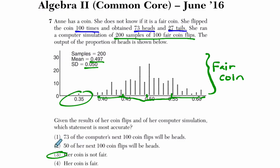And then if you look at choices 1 and 2, you can see they're kind of absurd. 73 of the computer's next 100 coin flips will be ahead. That's not at all what this is saying in any way whatsoever. And 50 of her next 100 coin flips will be heads. You can't say that exactly, right? That's only an approximation. If it is a fair coin, you could say that.